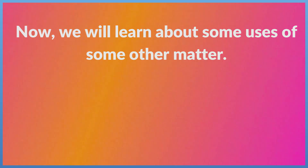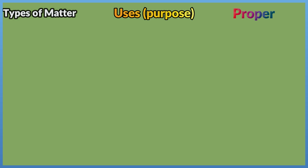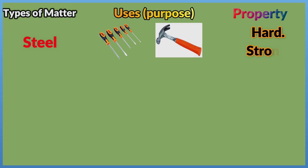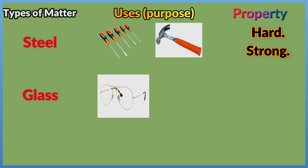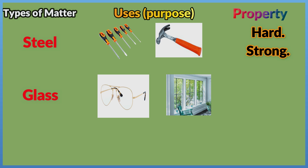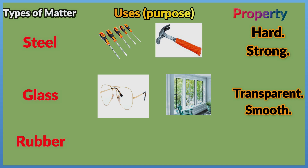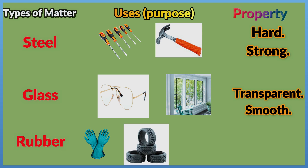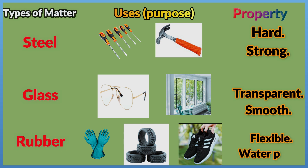Now we will learn about some uses of other matter. Types of Matter — Uses, Purpose, and Property: Steel is used in screwdrivers and hammers because it is hard and strong. Glass is used in eyeglasses and windows because it is transparent and smooth. Rubber is used in gloves, tires, and athletic shoes because it is flexible and waterproof.